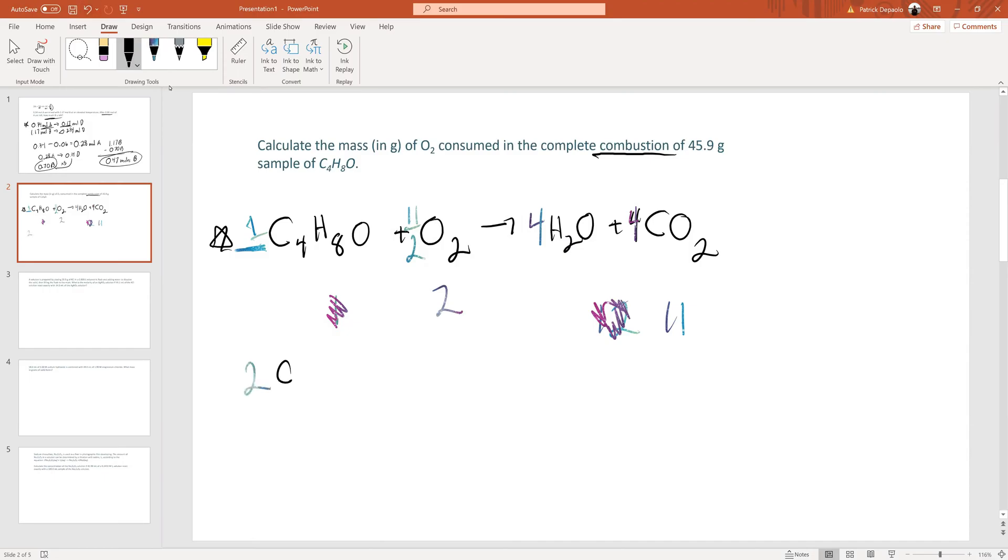Once we do that and we multiply the entire equation by 2, which doesn't change any of the balancing, we can get 11 as the coefficient for oxygen. So we'd have 2C4H8O plus 11O2 yields 8H2O plus 8CO2. That's balanced.